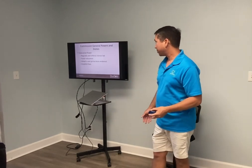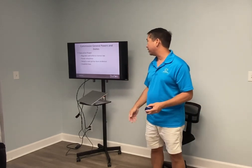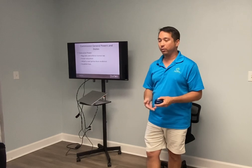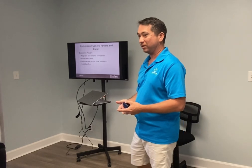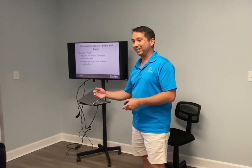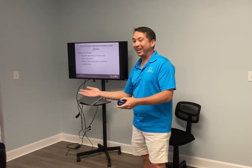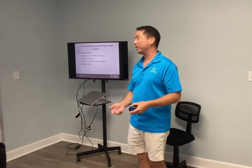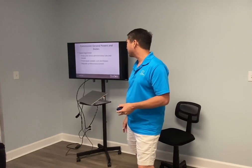Commission general powers and duties include executive power — regulating and enforcing license law, fostering education, and adopting the seal. When we talk about adopting the seal, that relates to prima facie, which means taking things at face value. If you have a real estate license, it's presumed valid and you can use it. The commission also establishes fees — for example, they set the $85 license fee.